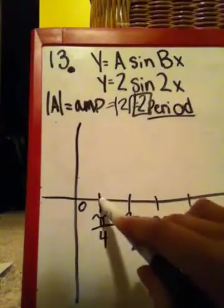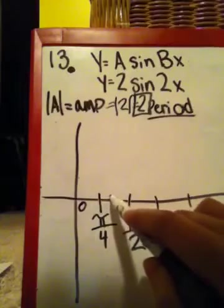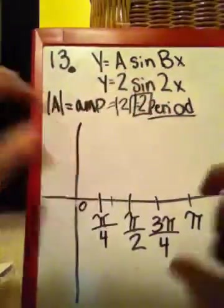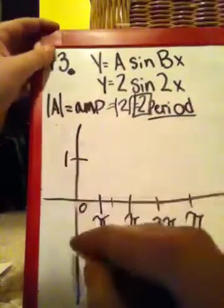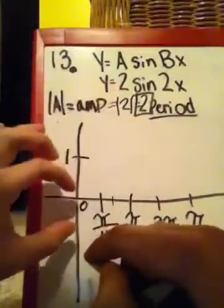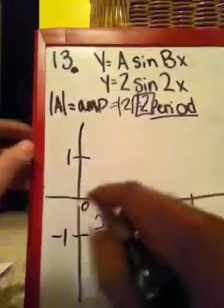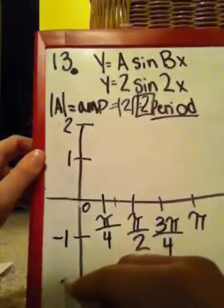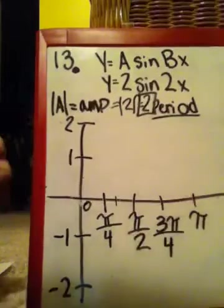So π over 4 is about 0.78, so a little bit more than π over 4. Take that measurement and mark 1. And you can double that and make that 2.